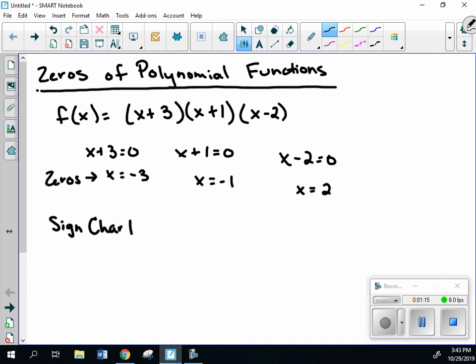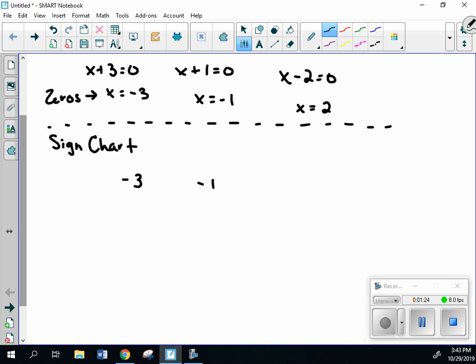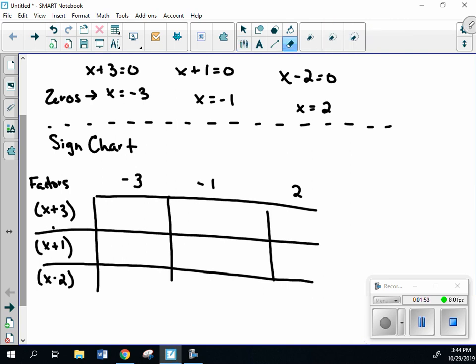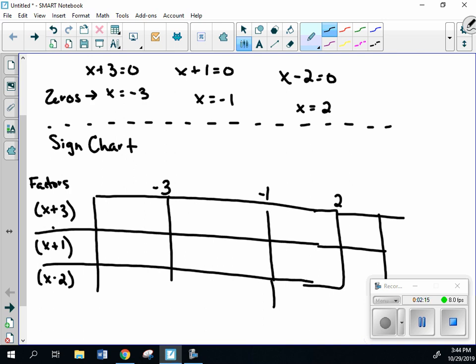So with our sign chart, our sign chart is going to be using those zero numbers, so negative 3, negative 1, and 2. And then we're going to list down this side our factors. So we had originally x plus 3, x plus 1, and x minus 2.